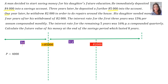One year later, he withdrew 2000 rand in order to do repairs around the house. His daughter needed money four years after the withdrawal of 2000 rand. So here at the end of the four years, we will decide what's going on there.